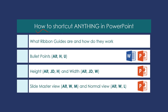For a quick recap of how to shortcut anything in PowerPoint using Ribbon Guides: we looked at what Ribbon Guides are and how to use them; adding bullet points with Alt, H, U, which works both in Word and PowerPoint to open the bullet dropdown menu; changing height and width with Alt, J, D, H and Alt, J, D, W in PowerPoint, and how to Tab and Shift-Tab through those input boxes; and finally the Slide Master view — Alt, W, M to make edits to the underlying slides, then Alt, W, L to jump back to the normal view.